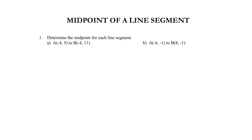The first problem asks you to come up with the midpoint for each line segment. In problem A, you've been given a line segment that runs from A to B, and you have the coordinates for them — figure out the midpoint. Same thing for problem B: there's another line segment A to B with coordinates given. Come up with the midpoint for each. Go ahead and tackle that now, then we'll see how we match up. Pause the video now.